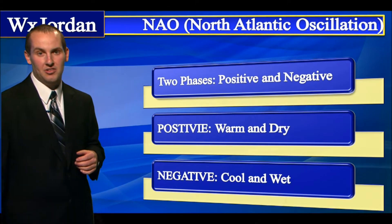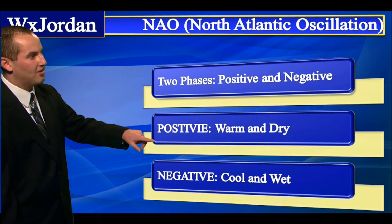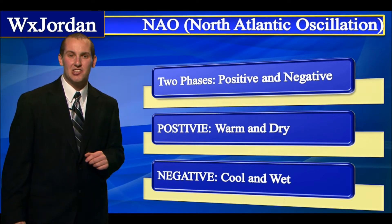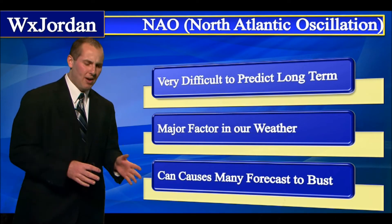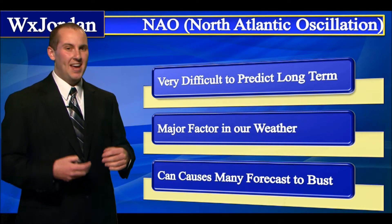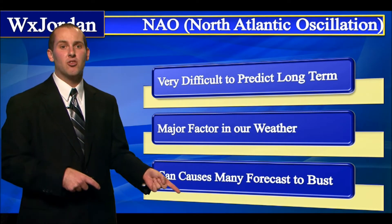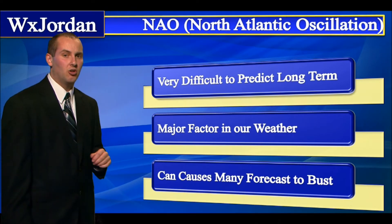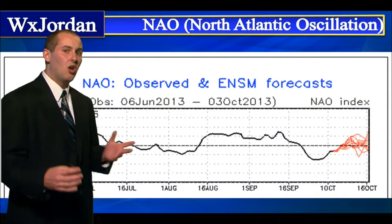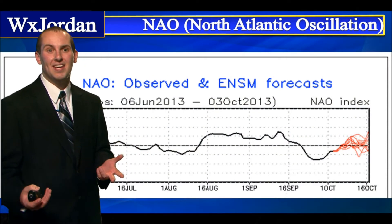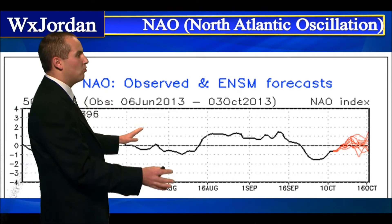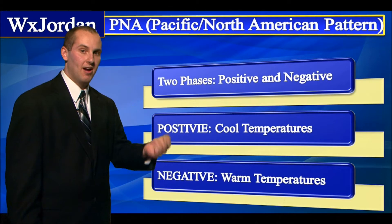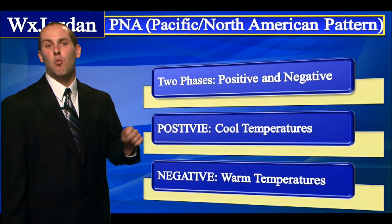Let's look at the NAO — the North Atlantic Oscillation. It has two phases: a positive phase and a negative phase. The positive means it stays warm and dry here in the Southeast; the negative means it stays cool and wet. The thing about the NAO is it's very difficult to forecast. But with that being said, it's a major factor into our weather, especially in the winter season. We really cannot forecast the NAO much over a week in advance, so this is something we'll have to watch all winter long. It could definitely be the driving factor of what causes us to have a very cold, snowy winter or a warm, dry winter.